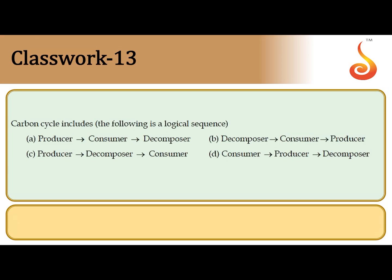The 13th question says: the carbon cycle includes — now choose the logical sequence. When we think of a typical food chain, the first step in the carbon cycle is locking up the carbon dioxide from the atmosphere in the form of organic compounds. So it always starts with a producer, then moves to a consumer, then to a decomposer, who sends carbon back via respiration, releasing carbon dioxide. Producers take in CO₂ from the atmosphere and decomposers give CO₂ back to the reservoir pool. So option A is the correct logical sequence.